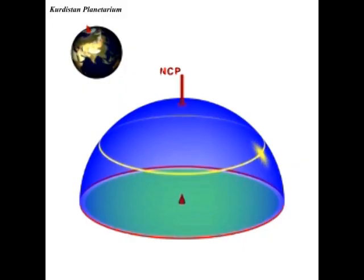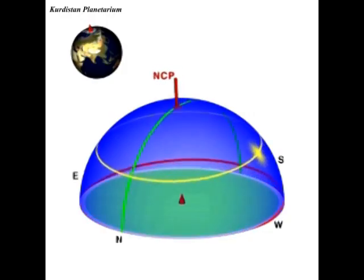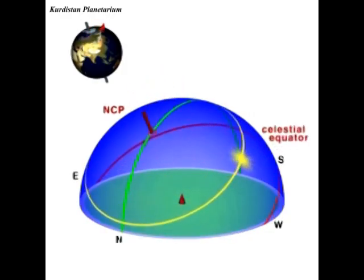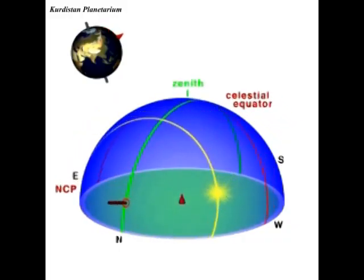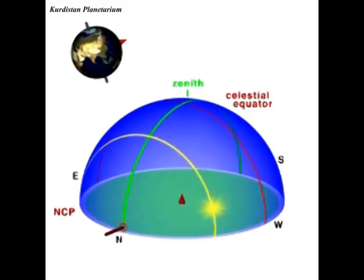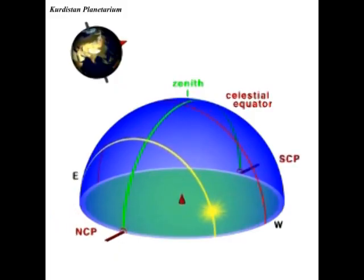Imagine now you move to the Earth's equator. The celestial equator runs from east to west through the zenith, the overhead point. The celestial poles are due north and south on the horizon. The north-south line on the sky through the zenith is called the meridian.